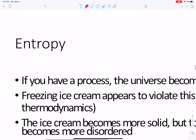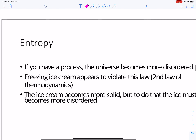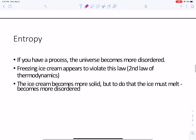You also have this other thing called entropy. This is a little bit more difficult to work through because it's the second law of thermodynamics. Entropy basically says: in any process, the universe becomes more disordered. So entropy is a measure of disorder.